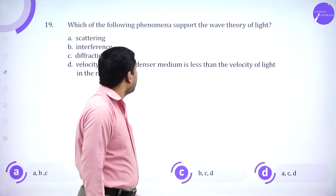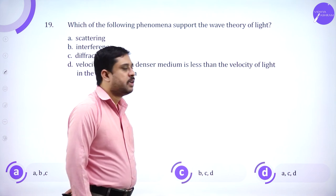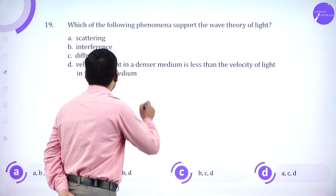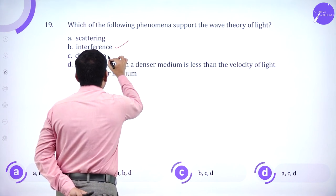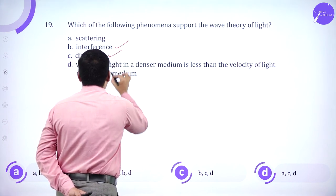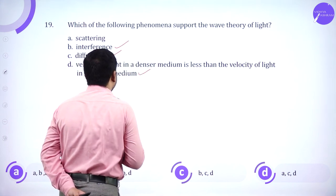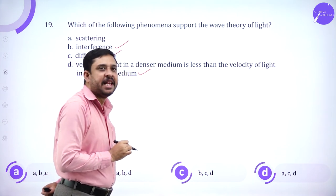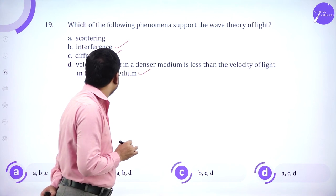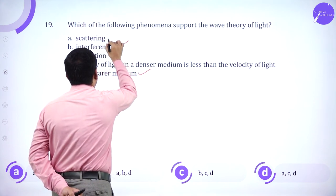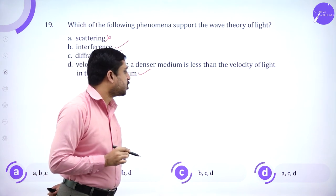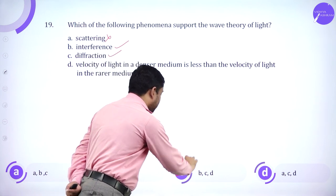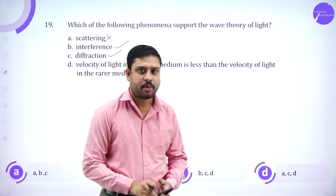Which phenomena support the wave theory of light? Interference, diffraction, and the fact that velocity of light in a denser medium is less than in a rarer medium all support wave theory. However, scattering does not support it. So the answer is B, C, D.